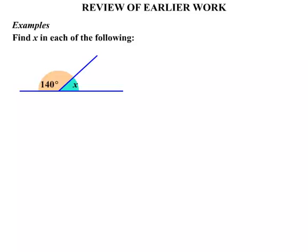Let's look at some examples then, some simple examples. We need to find x in each of the following. Now this example here, there's x, it's next to the 140 degrees and together it's a straight angle. So we'd say that x equals 40 degrees because angles on a straight line add to 180.